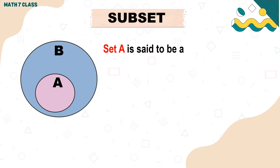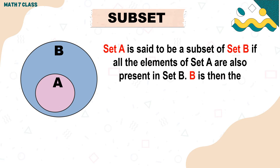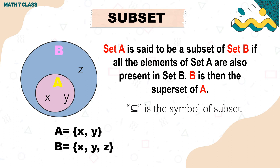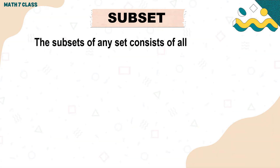Next, we're going to discuss about subsets. Set A is said to be a subset of Set B if all the elements of Set A are also present in Set B. B is then the superset of A. This is the symbol for subset. The elements of Set A are X and Y, and since Set A is a subset of B, the elements of B are X, Y, and Z.